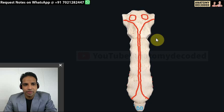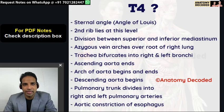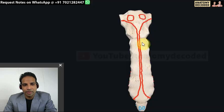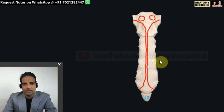At the angle of Louis: it is the junction between the superior and inferior mediastinum; the ascending aorta ends and the arch of aorta begins here; the arch of aorta also ends here and the descending thoracic aorta begins; the trachea bifurcates into the right and left main bronchi; and the pulmonary trunk bifurcates into right and left pulmonary arteries. Fractures of the sternum most commonly occur at this junction - the manubriosternal joint.